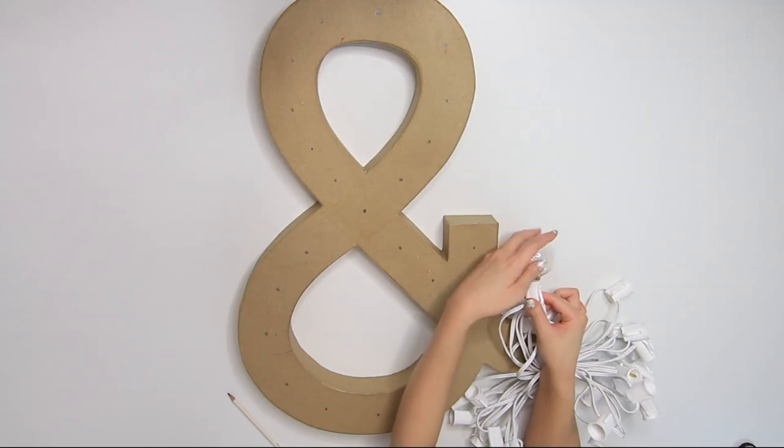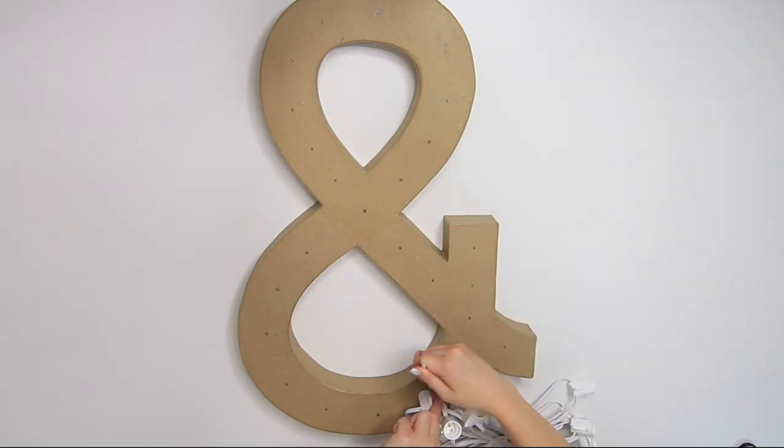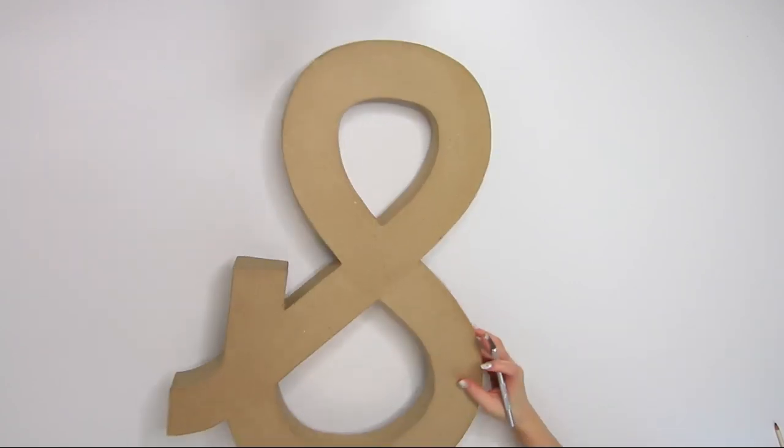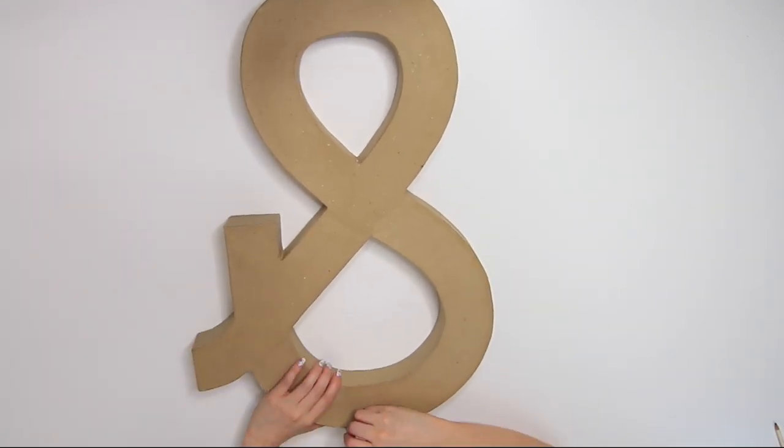I unscrewed all the light bulbs of that light string cord to trace the light socket on top where I marked my dots all around. The light socket will be glued inside this paper mache, so I had to cut out the back and toss away all that cardboard stuffing.